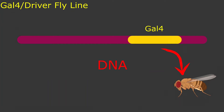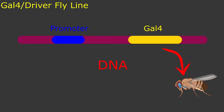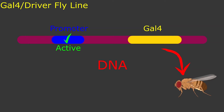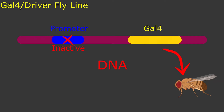Each GAL4 line contains a GAL4 gene, which codes for a GAL4 protein, as well as a tissue-specific promoter gene, which only allows GAL4 to be produced in certain tissues. So you could have a line that's only produced in the gut, while another line might only be produced in the brain, or pretty much anywhere you want. If the promoter is active, then GAL4 is expressed. But if the promoter is inactive, then GAL4 won't be expressed and the GAL4 protein won't be produced.